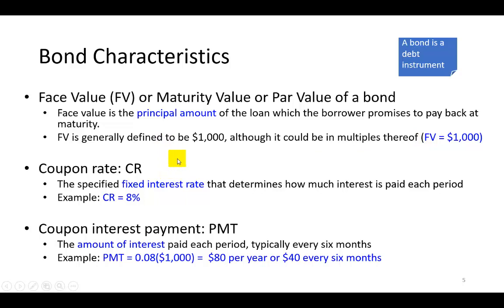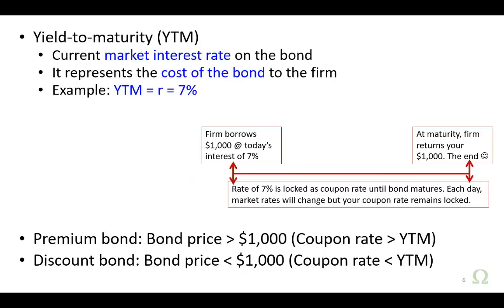The second characteristic is the fixed interest rate attached to that bond, which determines the fixed income you receive from period to period. That fixed interest rate is called the coupon rate. For example, it could be 8%. If you buy a bond with a coupon rate of 8%, then every year your coupon interest payment is going to be 8% of a thousand, which comes out to $80 per year, or $40 every six months — which is typically the case, because bonds for the most part pay interest semi-annually.